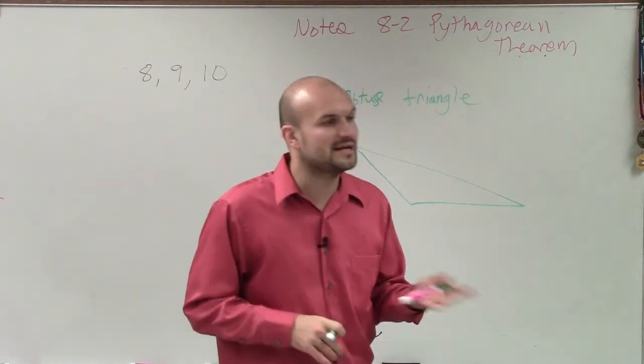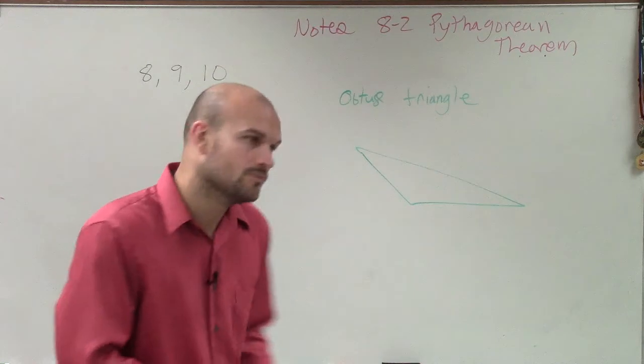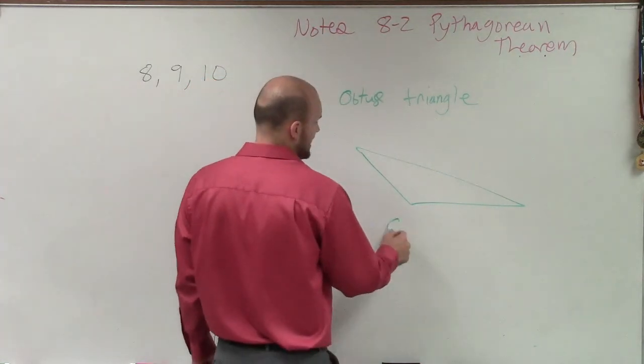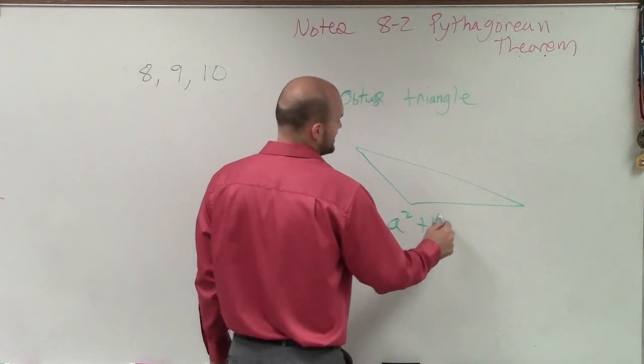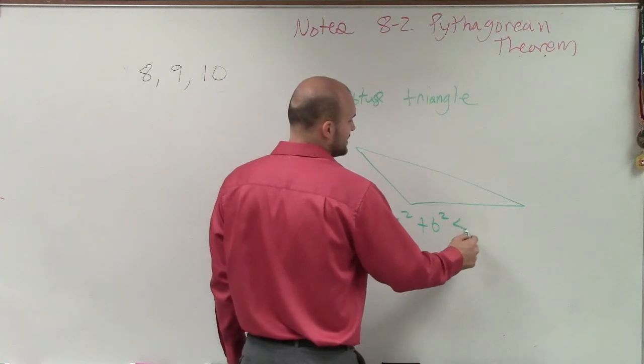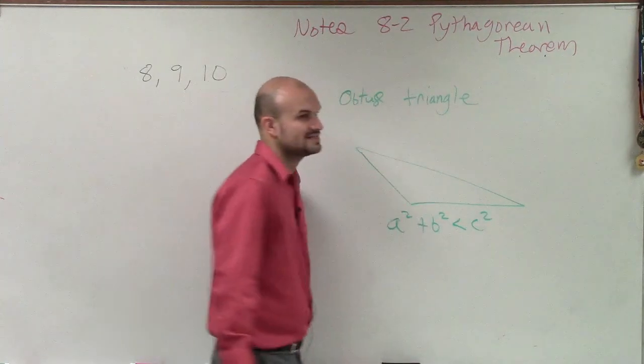Now, to determine if a triangle is obtuse, what we need to do is, again, go back to our Pythagorean inequality. a squared plus b squared now has to be less than c squared.